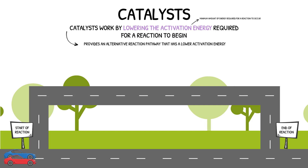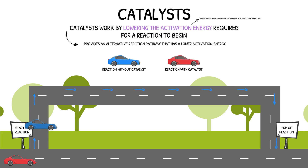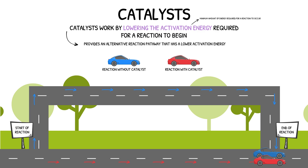In this visual example, the blue car represents a reaction that is taking place without a catalyst, and the red car represents a reaction that is taking place with a catalyst. Without a catalyst present, the blue car must use this route to reach the end of the reaction pathway — a route which is much longer and requires more energy to complete. In contrast, with a catalyst present, the red car can take this alternative pathway. You'll notice that the destination for both reactions are the same; however, the reaction with the catalyst simply offers an alternative pathway that requires less energy and is therefore much faster.